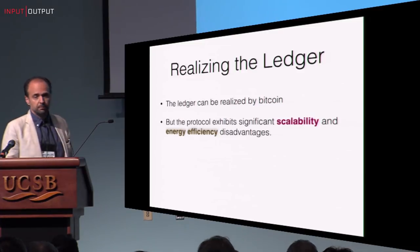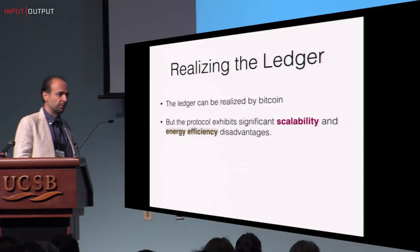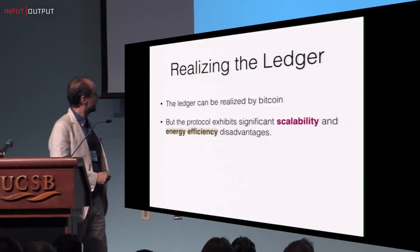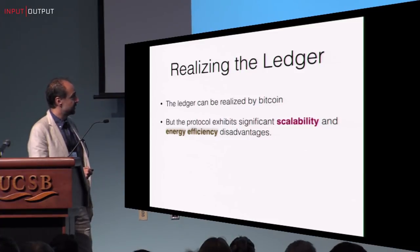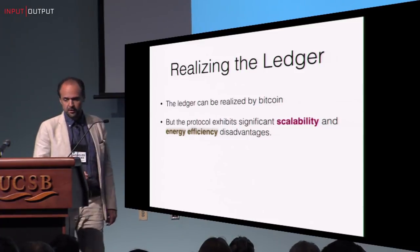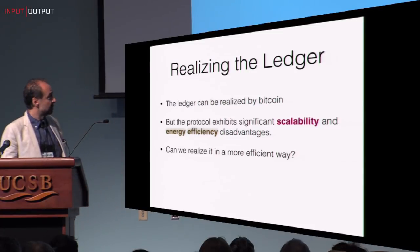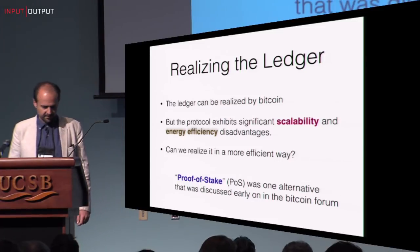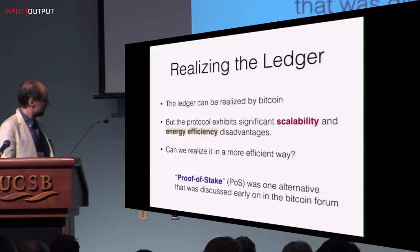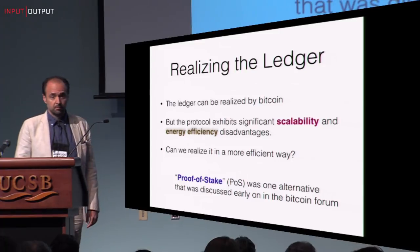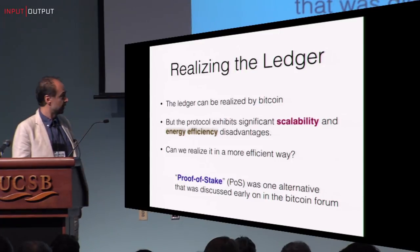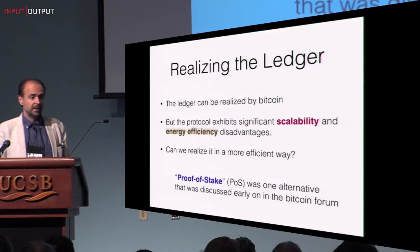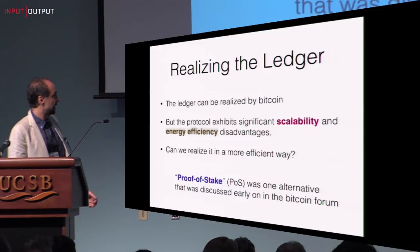But we also know, from the way the protocol actually works in the real world, that it accepts significant scalability and energy efficiency disadvantages. So can we realize it in a more efficient way? It is at this point that an idea called proof of stake was circulated in the Bitcoin community as early as 2011, as a possible way of designing a more efficient ledger.